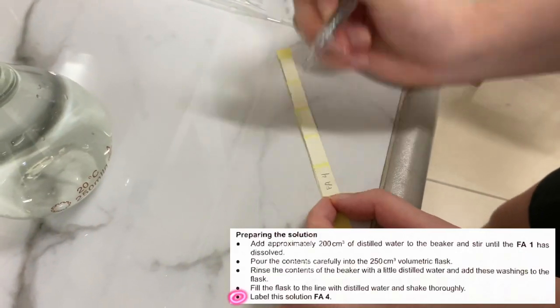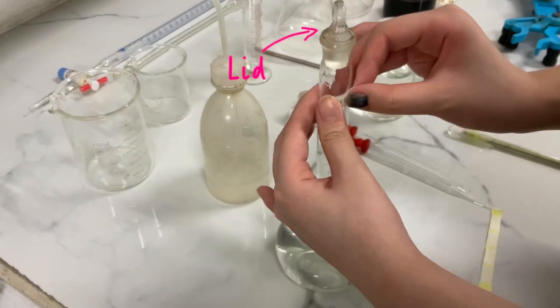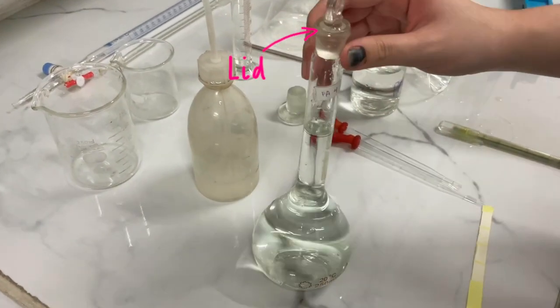Then, label the solution FA4, and don't forget to close the volumetric flask with a lid to prevent it from oxidizing, which can cause an alteration to our results.